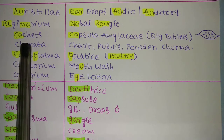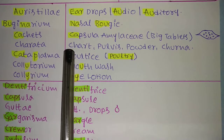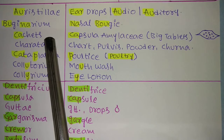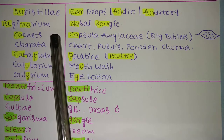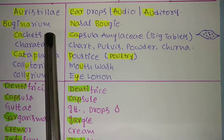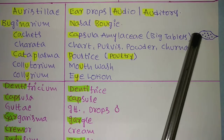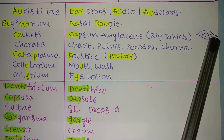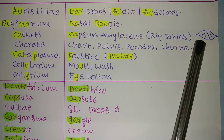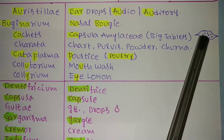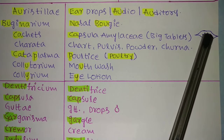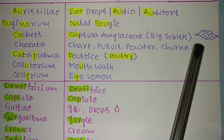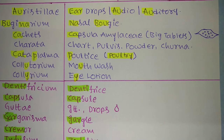Next is 'Cachets.' Most students do not know what formulation Cachets refers to. Cachets means 'capsula amylaceae' — it is also called a big tablet. Cachets are a dosage form used before the invention of tablets and capsules; they are the first solid dosage form. The outer layer is made with starch paste, and inside they put powders like paracetamol or ibuprofen powder, packed within the starch paste layer. The patient takes it through the mouth.